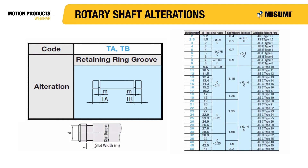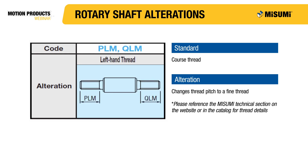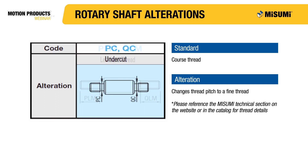Retaining ring grooves can be added to many rotary shafts, with location configurable in one millimeter increments, though the width is predetermined based on shaft diameter. Misumi always includes the appropriate retaining rings, which are also available separately. The standard thread pitch is coarse for Misumi shafts, but an alteration allows you to change to a fine thread when necessary. Another alteration can reverse the threads from right to left, and Misumi also offers an alteration that adds an undercut to the threaded position of the shaft.